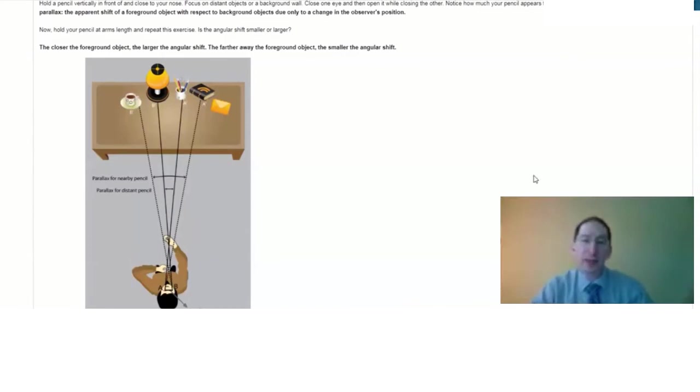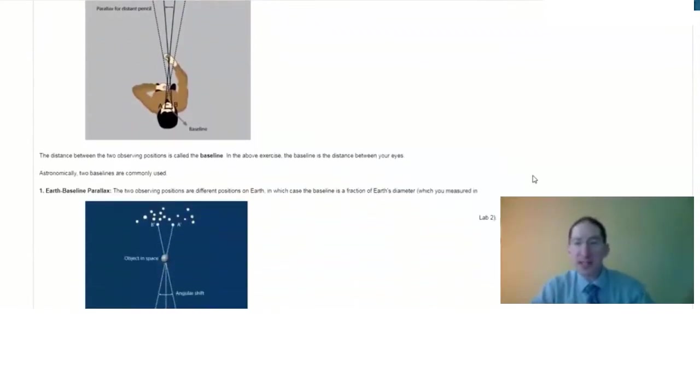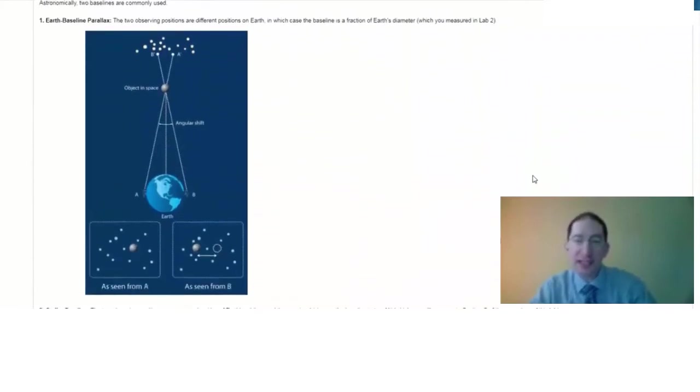Now in astronomy, there are two baselines that are typically used. The baseline is the distance between the two observing points. The first is Earth's diameter, or some fraction thereof, and we call this Earth baseline parallax, and it's good for measuring distances within the solar system. You see one observer over here, at position A, and another observer on the other side of the planet, at position B, and they are both observing the same object.